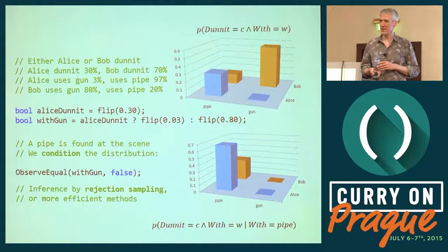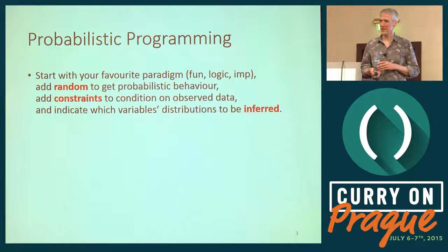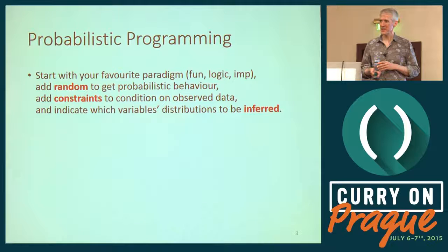In probability notation, this is probabilistic or Bayesian reasoning about a situation. We have a generative model — a probabilistic program that represents our view of how data is generated — and then we place constraints on the actual generated data in light of observations. You can do probabilistic programming in many languages, functional or imperative. There are really three things you add: randomness (tossing coins, rolling dice, drawing from Gaussian distributions), constraints like an observe-equal operator, and a way of specifying which variables you want to infer.